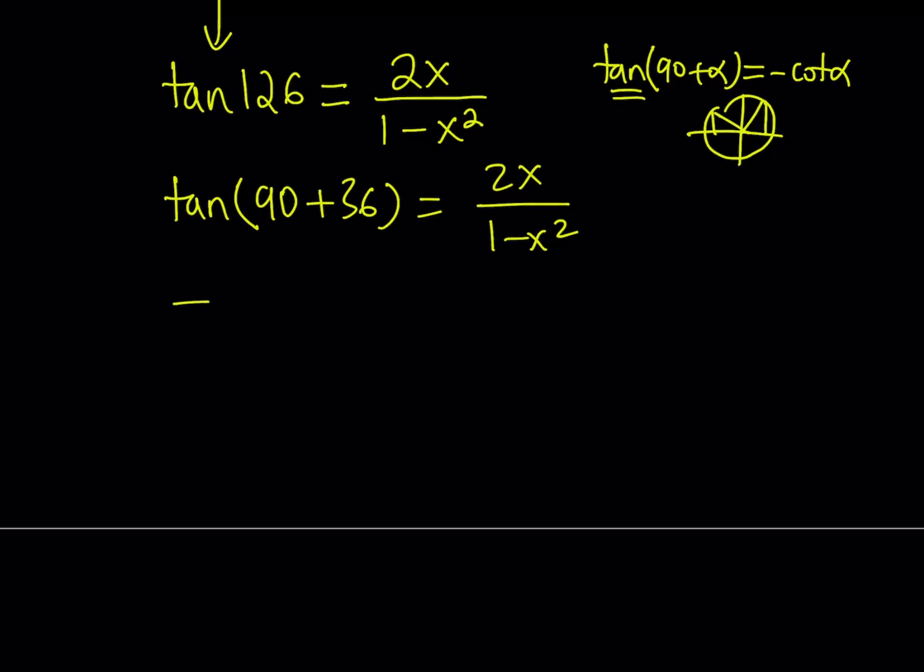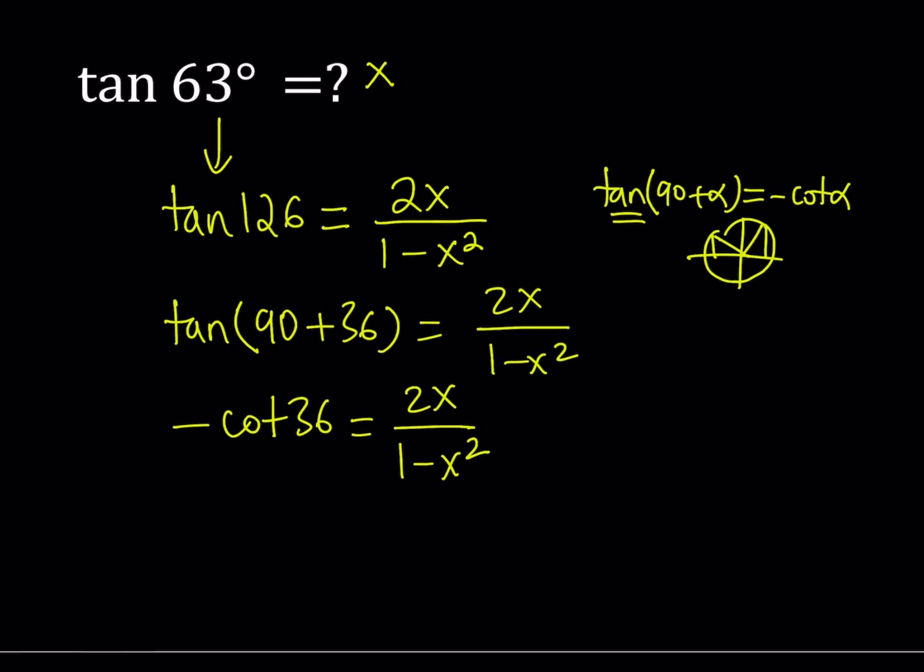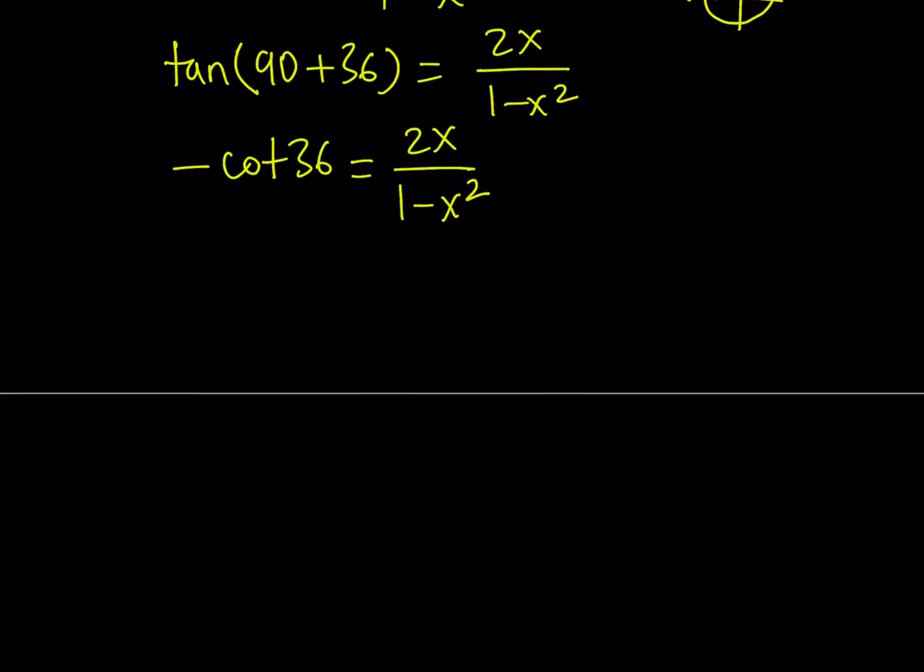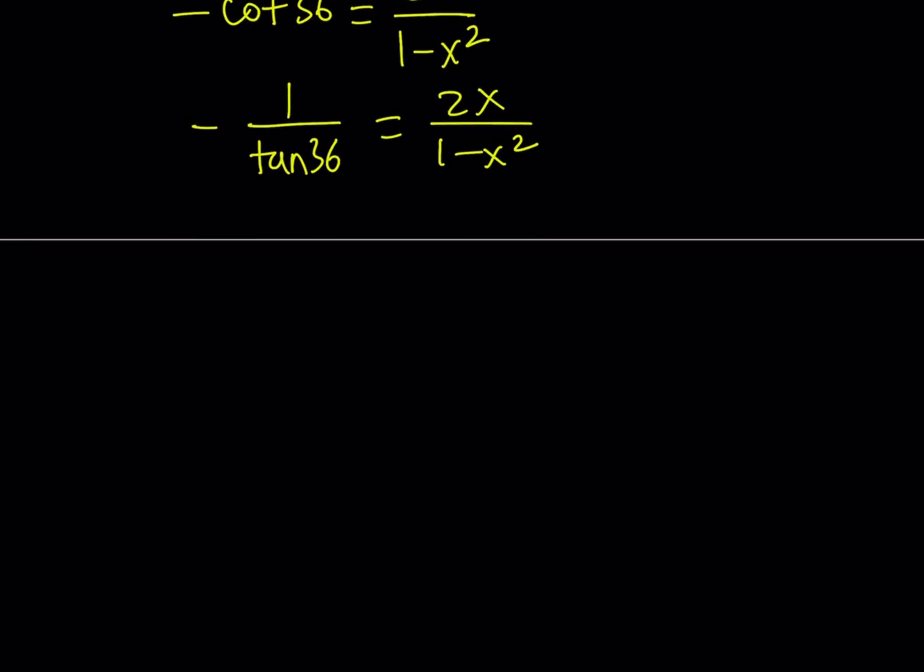Great. So, this is going to give us negative cotangent 36 degrees, which is equal to 2x divided by 1 minus x squared. Now, remember, tangent 63 degrees is equal to x, so we're looking for x. Great. Let's just go ahead and manipulate this expression as much as we can. But here's the thing. What is cotangent 36? Well, cotangent 36 can be written as 1 over tangent 36, so this expression can be written as negative 1 over tangent 36 equals 2x over 1 minus x squared. So, here's what I would like to do. I'd like to flip both sides and negate. So, from here, I can get tangent 36 degrees as x squared minus 1 divided by 2x. So, basically, this comes down to finding the value of tangent 36 and then setting up an equation to solve for x.